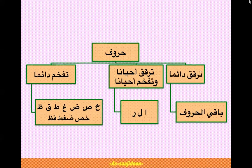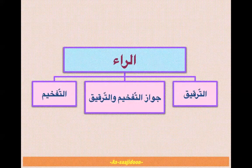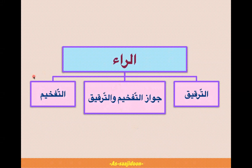پچھلی class میں ہم دیکھ رہے تھے کہ حروف کو تفخیم اور ترقیق کے اعتبار سے تین حصوں میں تقسیم کیا گیا ہے: کچھ حروف ہمیشہ موٹے پڑھے جاتے ہیں، کچھ ہمیشہ پتلے، اور تیسری category یہ ہے کہ کچھ حروف کبھی موٹے اور کبھی پتلے پڑھے جاتے ہیں۔ Ra کے تین conditions آتے ہیں: ہمیشہ موٹا، ہمیشہ پتلا، یا دونوں جائز۔